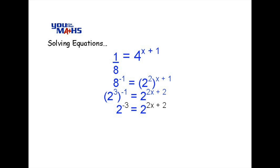On the left hand side by multiplying out the powers in the bracket we can see that we get 2 to the negative 3. And we now have a common base of 2. So we can equate those indices to say negative 3 is equal to 2x plus 2.